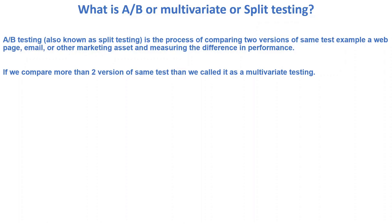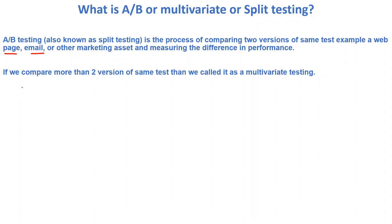Hello everyone, today we are going to discuss A/B testing. A/B testing is the process of comparing two versions of the same test. You can compare web pages, emails, or do some testing of marketing assets, and while using the testing you measure the difference in performance.